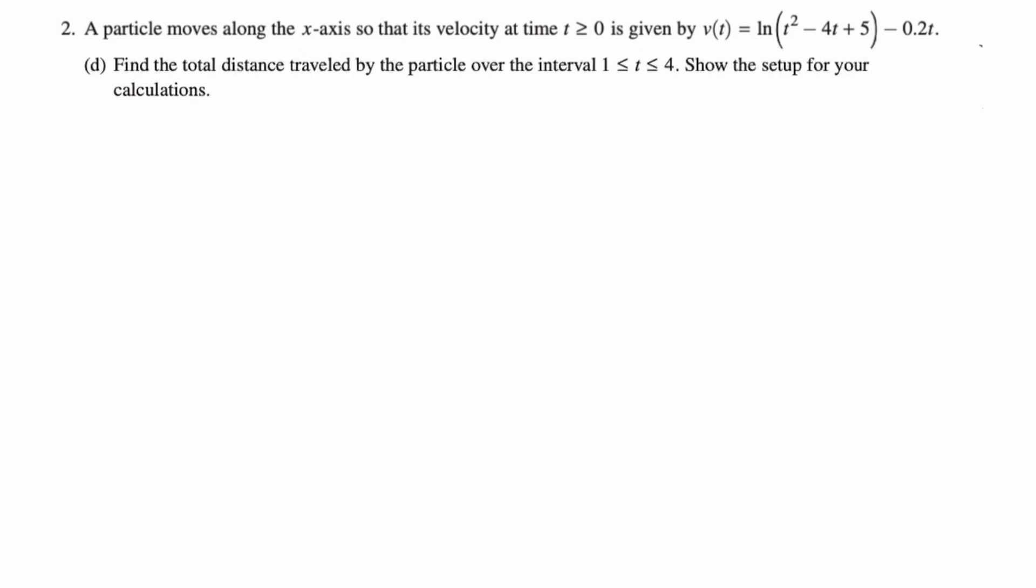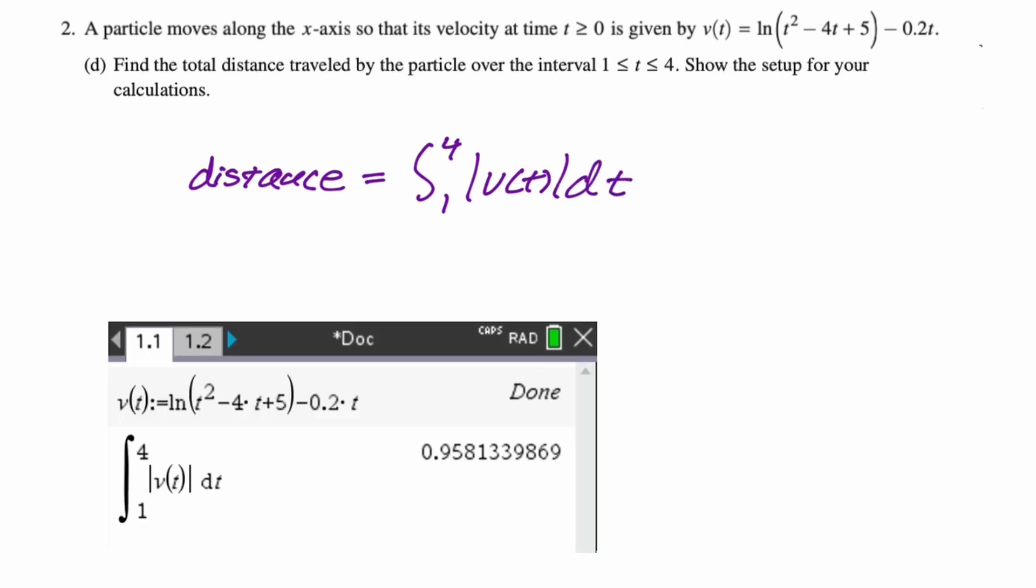All right, part D says find the total distance traveled by the particle over the interval 1 to 4. Show the setup for your calculations. This is pretty straightforward. Distance is going to be the integral from 1 to 4 of the absolute value of v of t dt. And then it's a calculator problem. So we punch that in on the calculator. So we'll say it's approximately 0.958. That's the entire question.